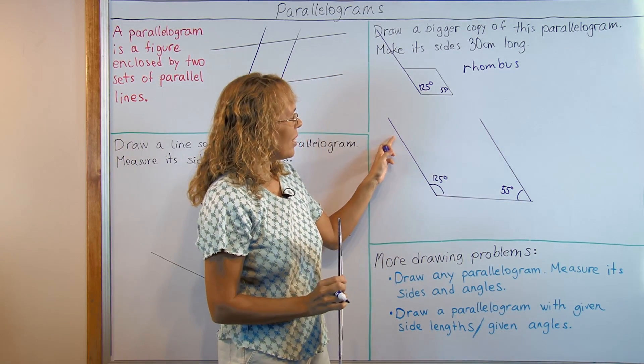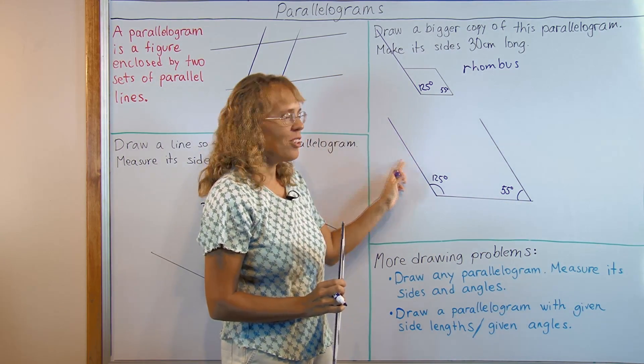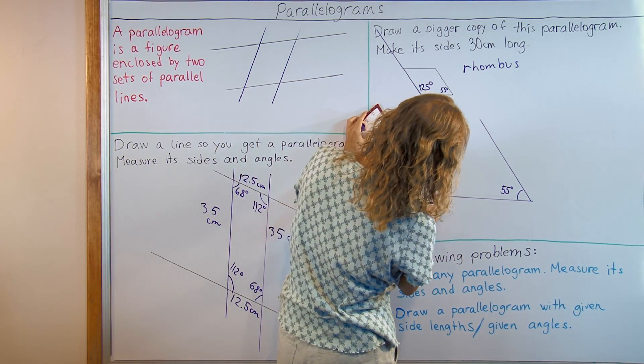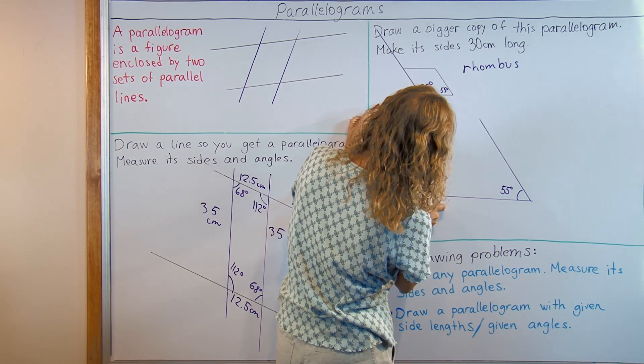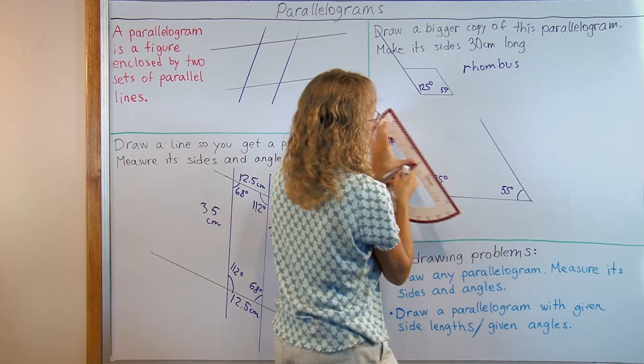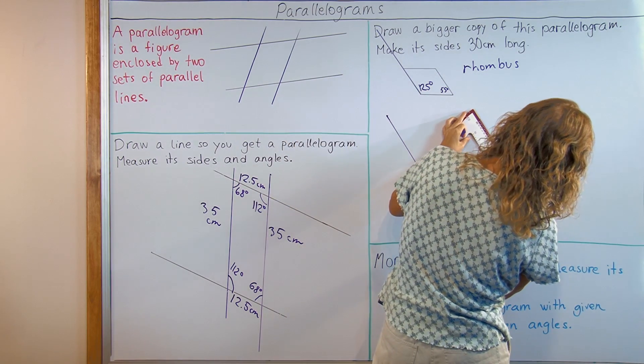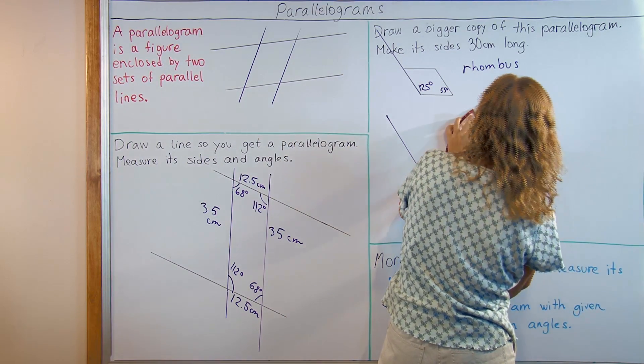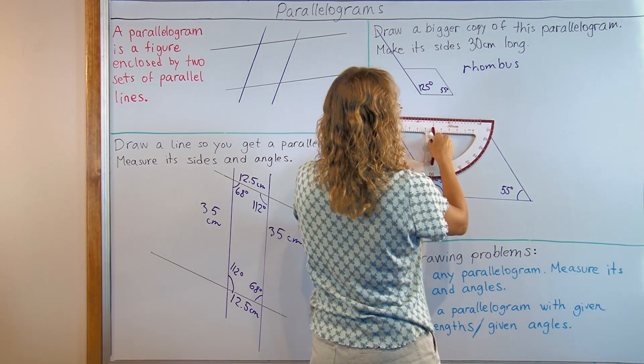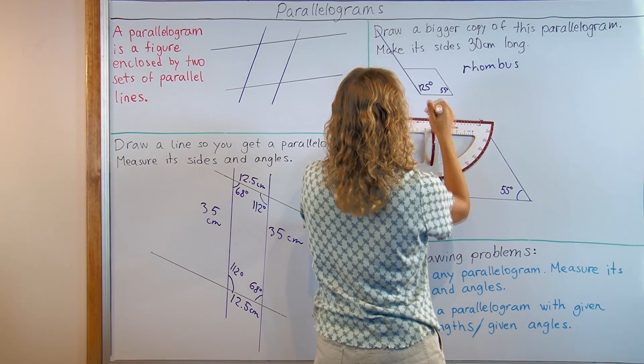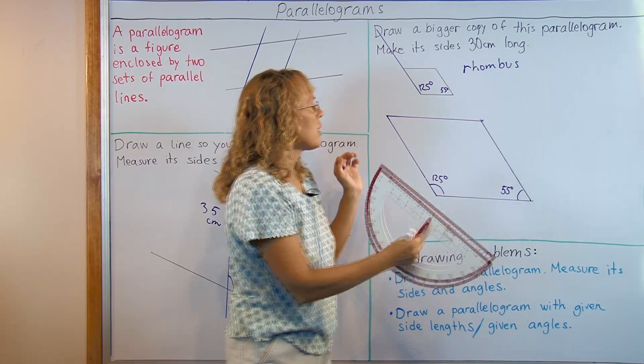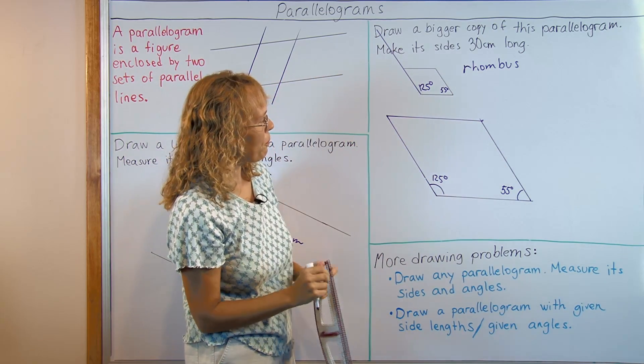Now I will measure 30 cm here and 30 cm here. I need to continue. This is just a third. Yeah, just mark it where it's supposed to be 30. And lastly, I'll draw in this last side. I don't need to measure any angles or anything for this last side. Okay. All done.